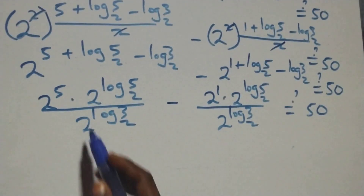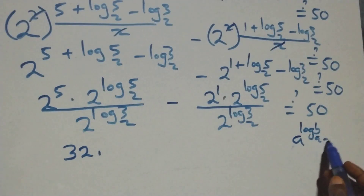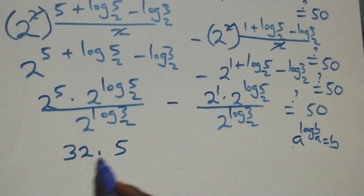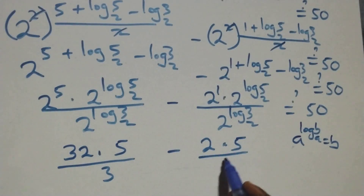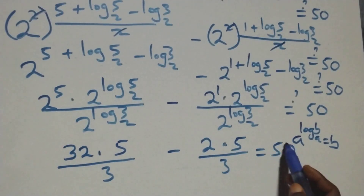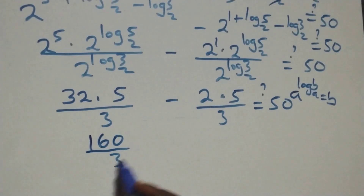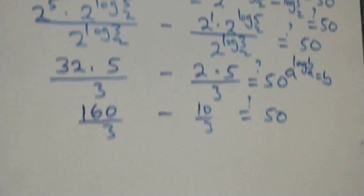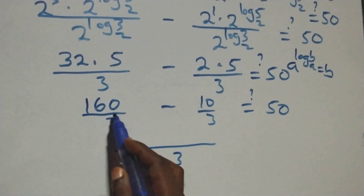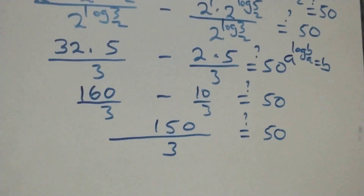Then here, 2 raised to power 5 is 32. This follows that a raised to power log b to base a equals b. So 2 raised to power log 5 base 2 is 5, then over 3 here. Minus: 2 raised to power 1 times 5 over 3. Is it equal to 50? Then here we have 32 times 5, that's 160, over 3, minus 2 times 5, which is 10, over 3. Is it equal to 50? We bring this together as one fraction: the denominator is 3, and 160 minus 10 is 150, over 3. And of course 150 over 3 gives us 50. It equals 50 on this side. Left hand side now equals the right hand side.